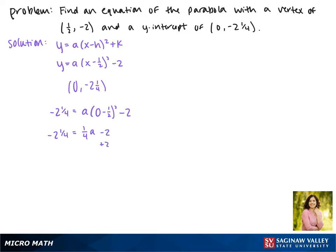Now solving for a we're going to move 2 to the other side. Negative 2 and 1 fourth plus 2 gives us negative 1 fourth. This equals 1 fourth a. To solve for a we're going to multiply both sides by 4 and this gives us a equals negative 1.